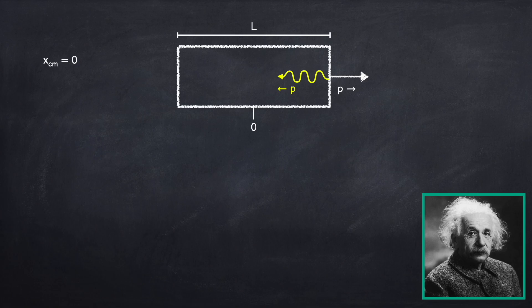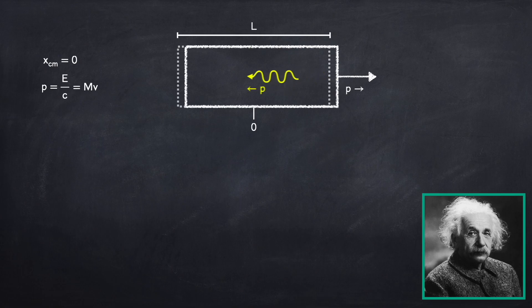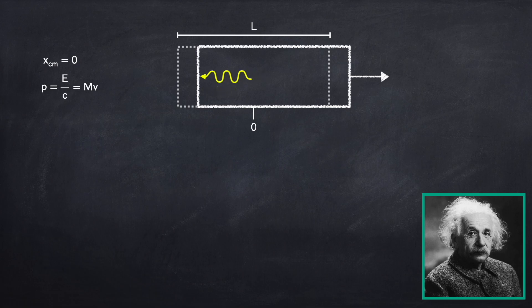The momentum of a photon is equal to its energy divided by the speed of light, and the momentum of the box is equal to its mass times its velocity. So as this photon moves from one side of the box to the other, the box is going to shift to the right, until the photon is absorbed by the other side of the box, at which point the whole system stops moving.